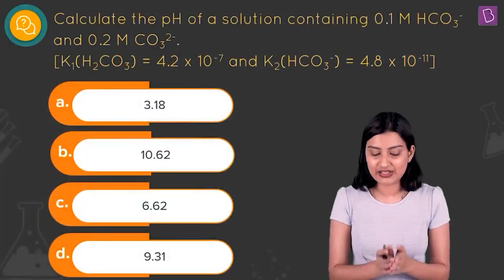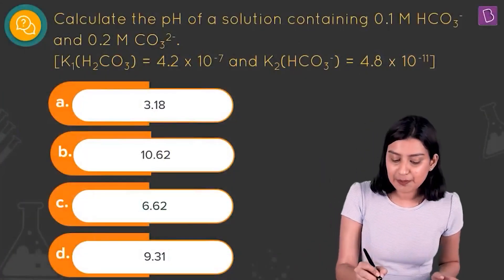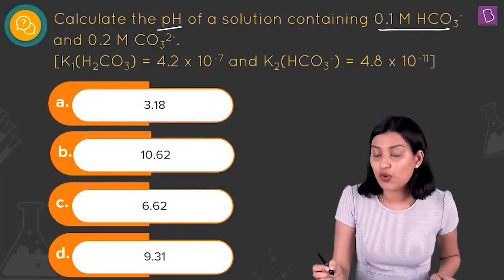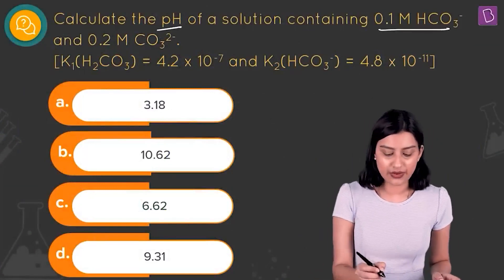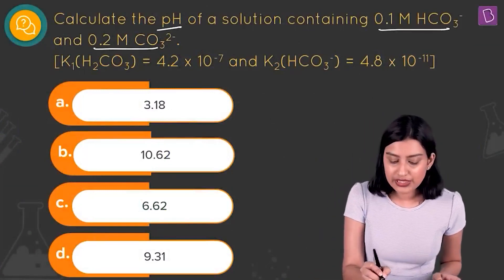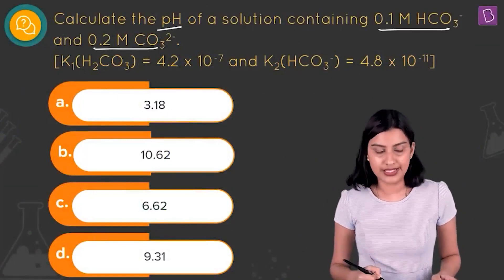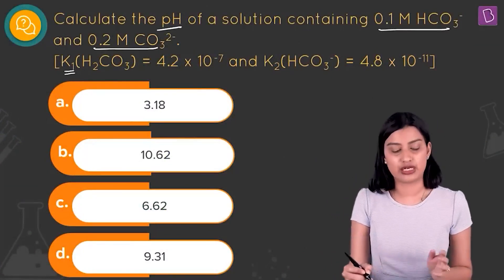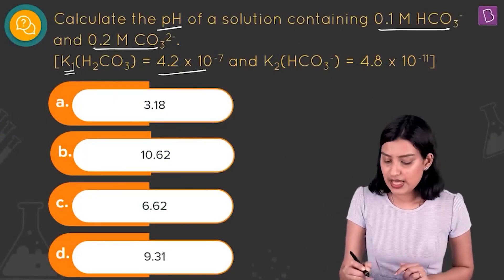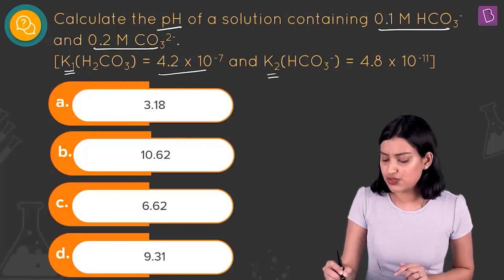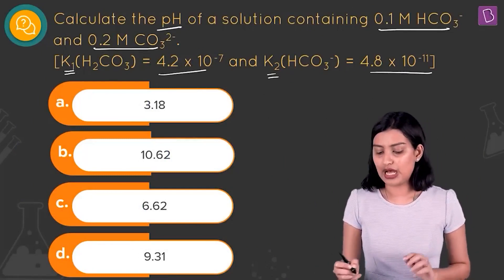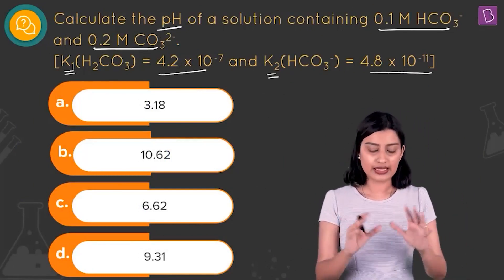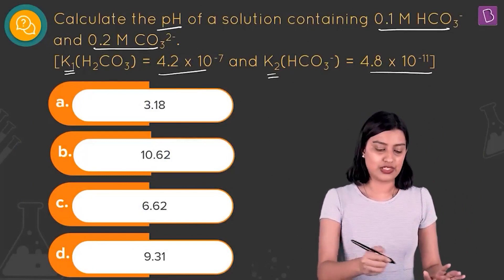Here they're asking us to calculate the pH of a solution containing 0.1 molar bicarbonate ion and 0.2 molar carbonate ion. They give you K1 for carbonic acid and K2 for bicarbonate ion, and these are the values given to you.